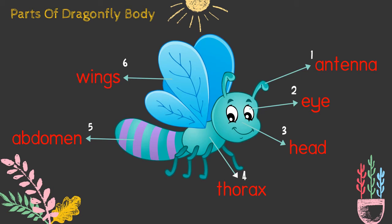So we repeat again. Number one, antenna. Number two, eye. Number three, head. Number four, thorax. Number five, abdomen. Number six, wings.